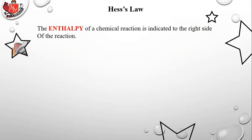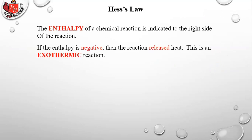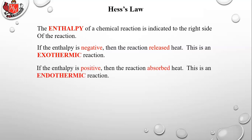The enthalpy of a chemical reaction is indicated to the right side of the reaction. If the enthalpy is negative, then the reaction released heat — this is an exothermic reaction. If the enthalpy is positive, then the reaction absorbed heat, and this is an endothermic reaction.